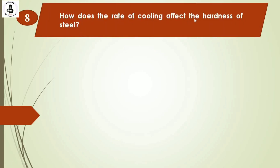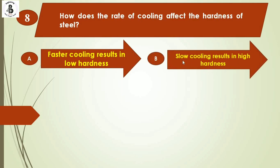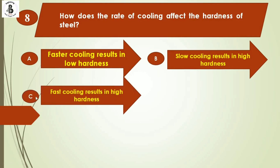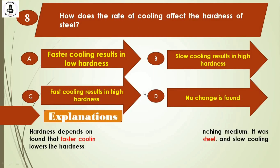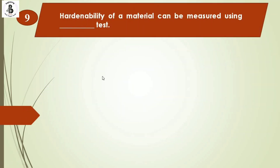Question 8: How does the rate of cooling affect the hardness of steel? Option A: faster cooling results in lower hardness, Option B: slow cooling results in high hardness, Option C: fast cooling results in high hardness, Option D: no change. Hardness depends on the nature and properties of the quenching medium. Faster cooling results in greater hardness, while slow cooling lowers the hardness. Water and oil are used to achieve a hard structure. The right answer is Option C.